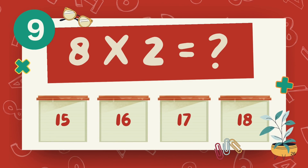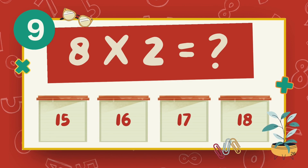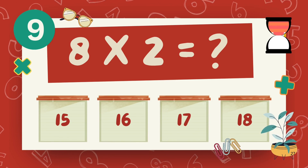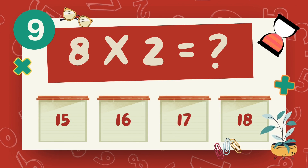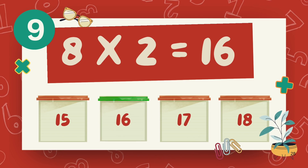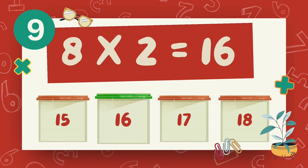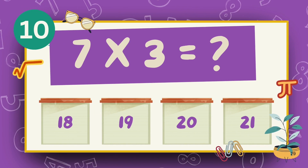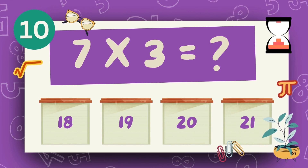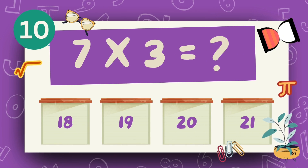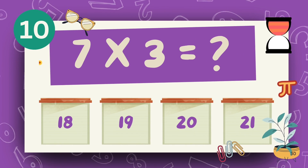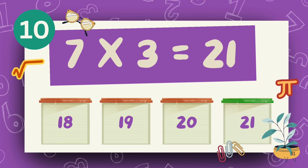What is 8 multiply 2? The answer is 16. What is 7 multiply 3? The answer is 21.